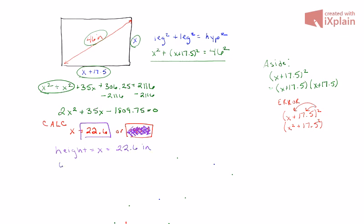Okay, from here, we can figure out the width. We know that the width is whatever the height is plus an additional 17.5 inches. That's going to be 22.6 plus 17.5 inches or it's equal to 40.1 inches. Okay, so this is the solution.